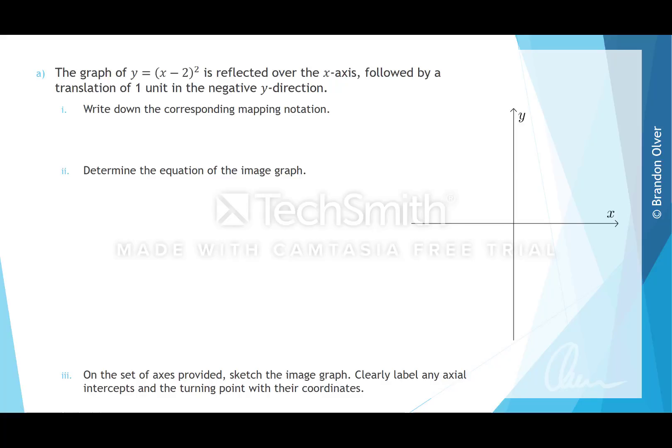The graph of y equals x minus 2 squared is reflected over the x-axis, followed by a translation of one unit in the negative y direction. For part 1 of this question, we want to write down the corresponding mapping notation for the transformation described in part A.